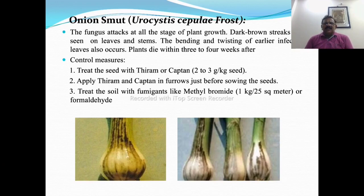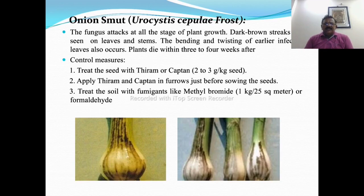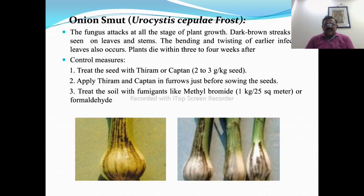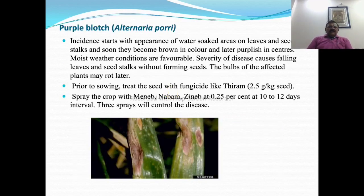Onion smut, caused by Urocystis cepulae, attacks all stages of plant growth. Dark brown streaks appear on leaves and stems with bending and twisting from early infection; plants die within 3 to 4 weeks. Control measures include treating seed with thiram or captan at 2 to 3 grams per kg seed, and treating soil with fumigants like methyl bromide at 1 kg per 25 square meters or formaldehyde.